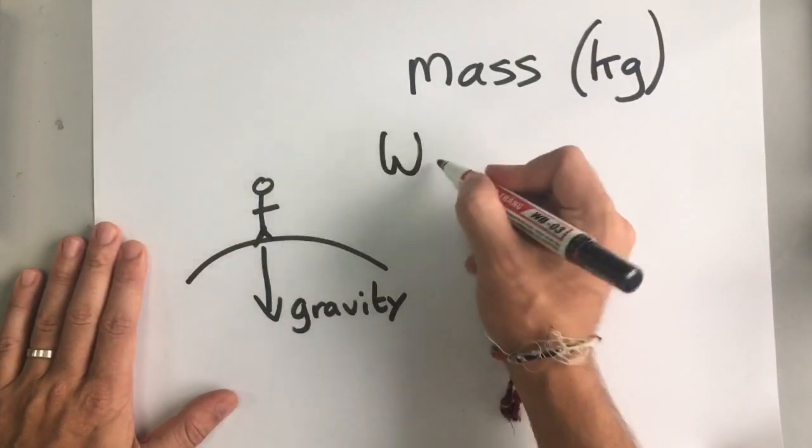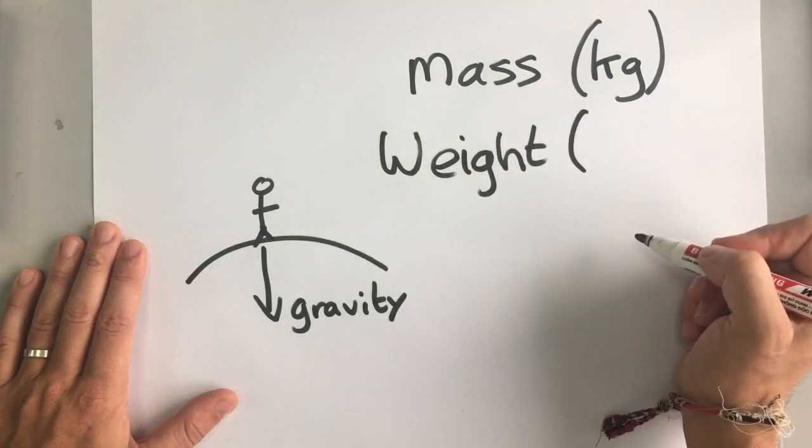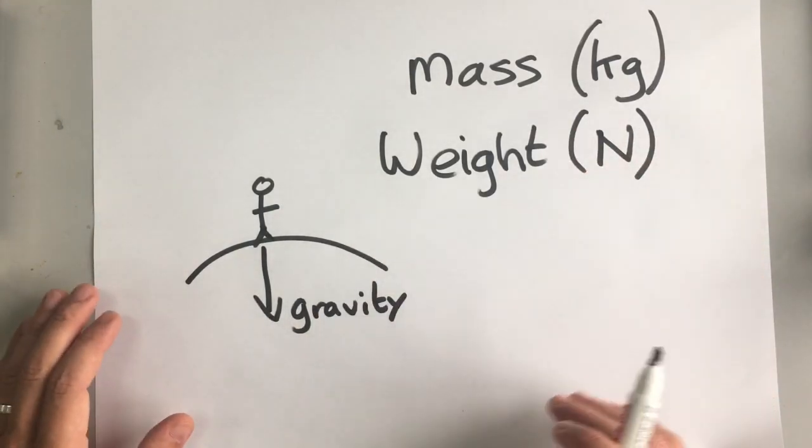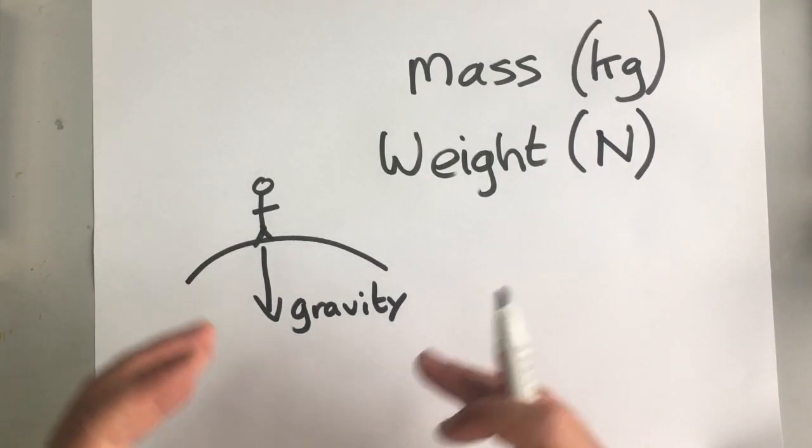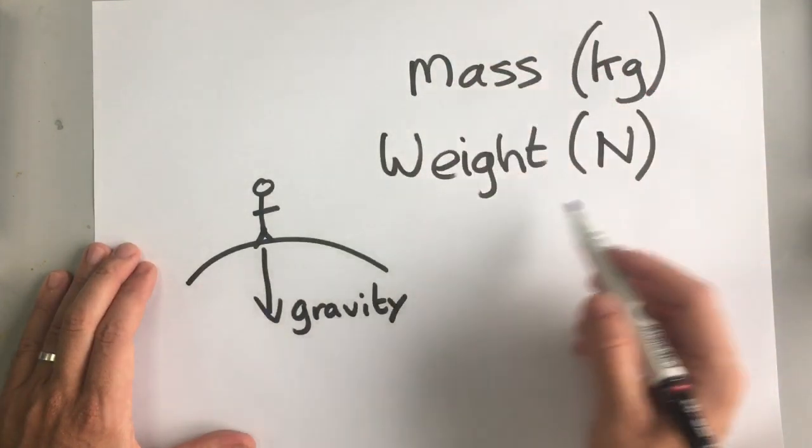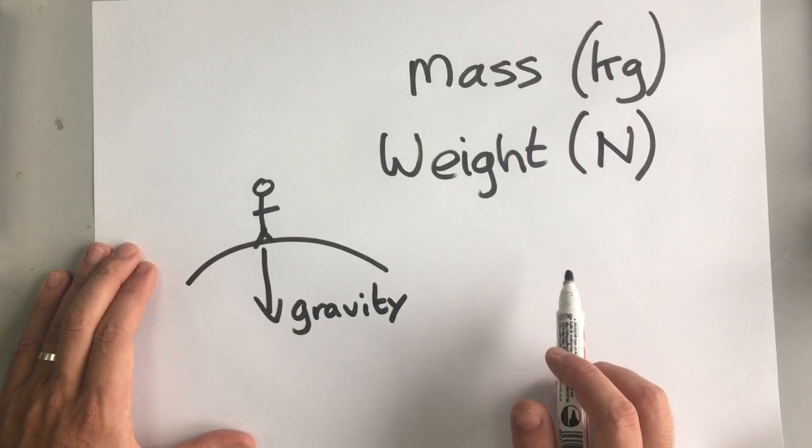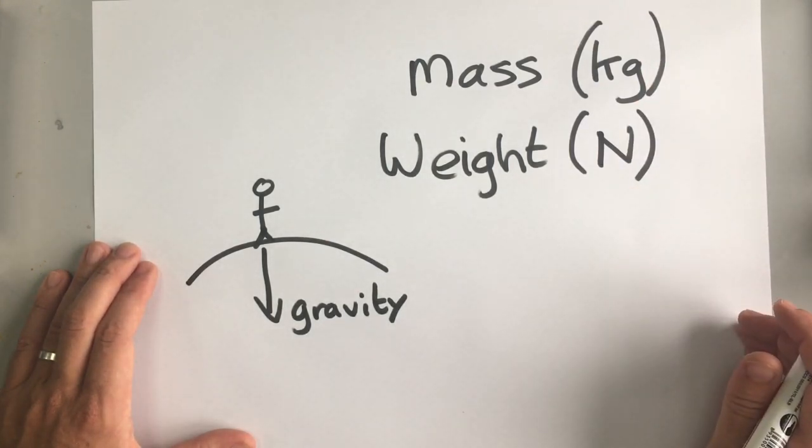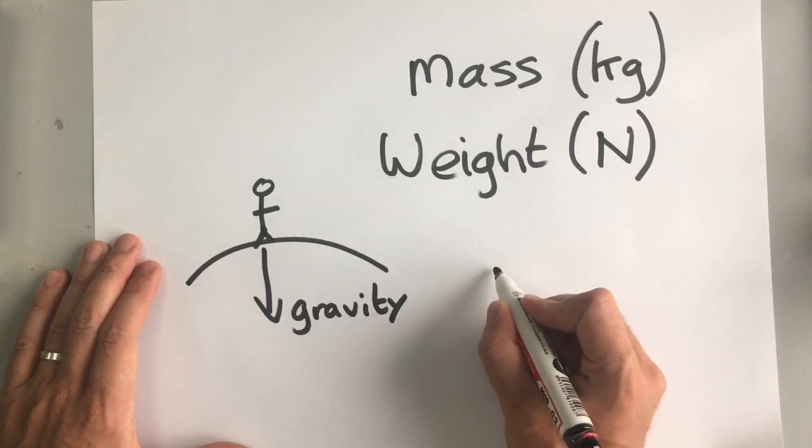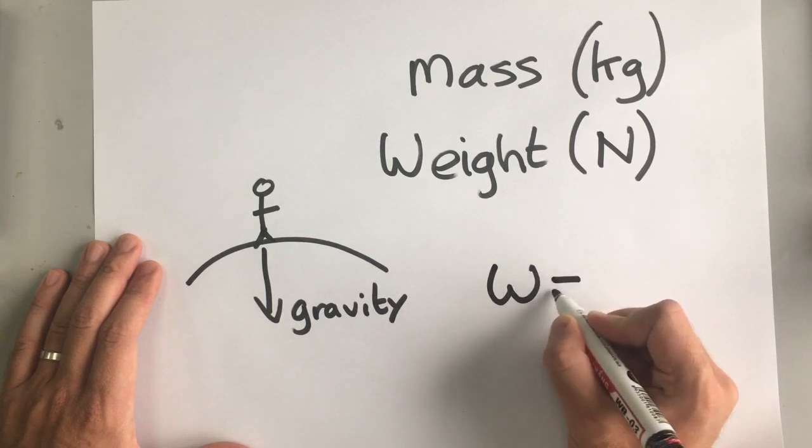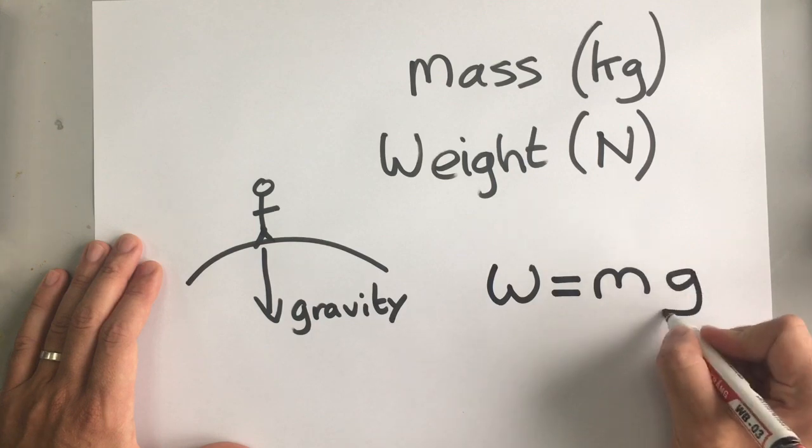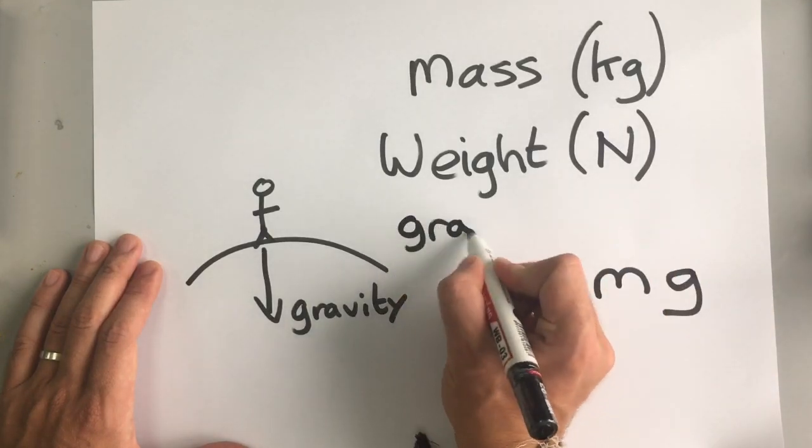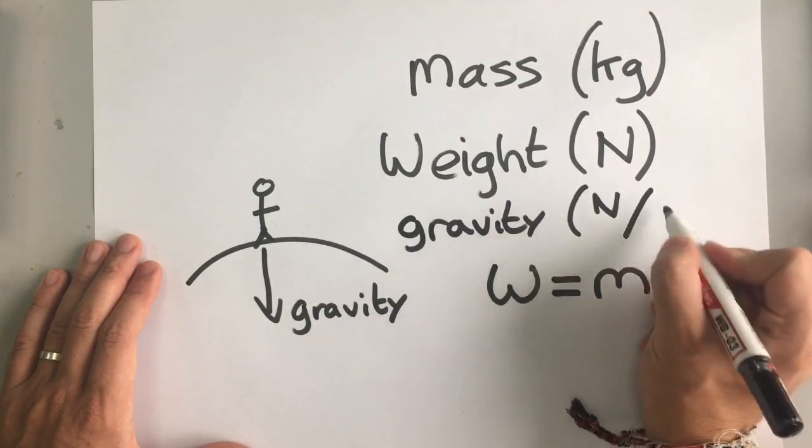Weight, remember, is a force. And forces are always measured in newtons. Now gravity is not a mass or a weight. Gravity is the thing that pulls everything towards the center of the earth. And we've got an equation that can link gravity and mass and weight together. We know that if someone is heavier, if someone has more mass, then gravity pulls them down with a greater force. And we can say that the weight, W, is the mass, M, times gravity, G. Now remember, weight is in newtons, mass is in kilograms. And so gravity can be measured in newtons per kilogram.